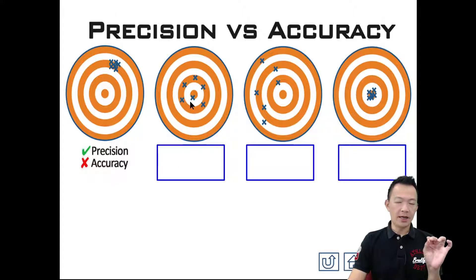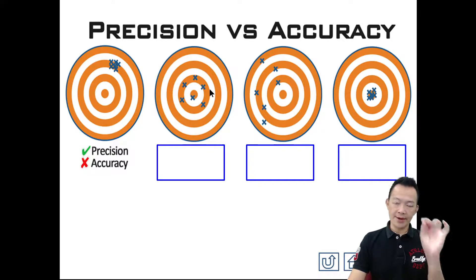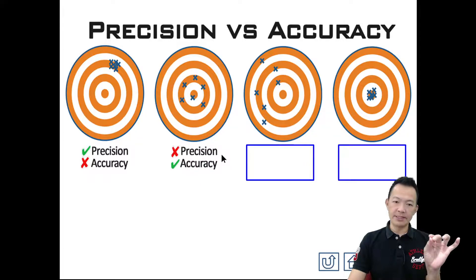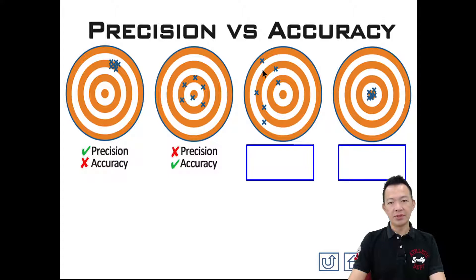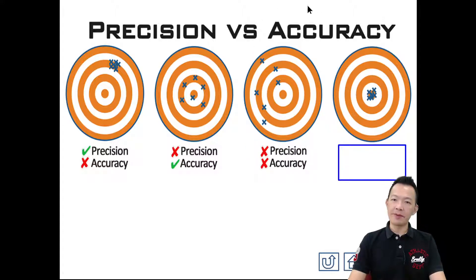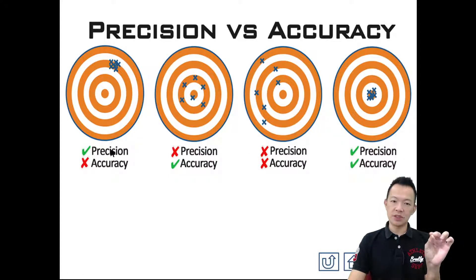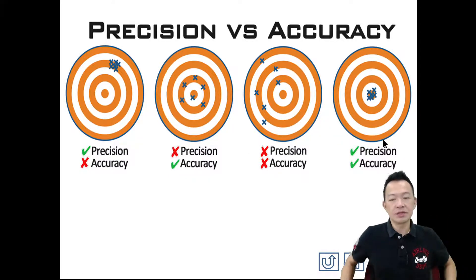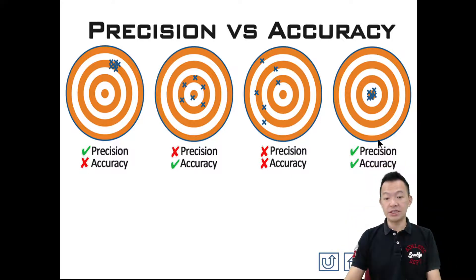Accuracy — is it there? Yeah, somewhere around the target, quite accurate. Precision — is it there? No — sometimes on the left, sometimes on the right. So: accurate but not precise. Accuracy — yes; precision — no. And if both are missing, then neither accuracy nor precision. The best case is when both accuracy and precision are present.